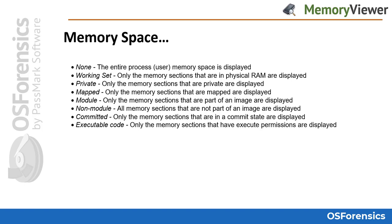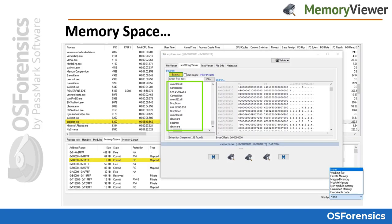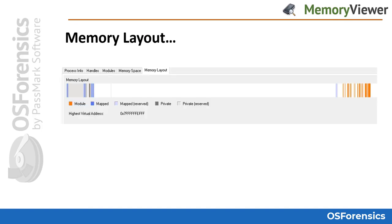Double-clicking on a memory section opens the internal viewer, where you can extract strings and perform other analysis. The memory sections can also be filtered based on the criteria laid out in this slide. Here we can see an example of double-clicking a memory space address from the explorer.exe process, with the lower right-hand of the screen showing the filtering options. In the final tab labeled memory layout, this shows a graphical layout of the allocated memory sections within the process's virtual address space.